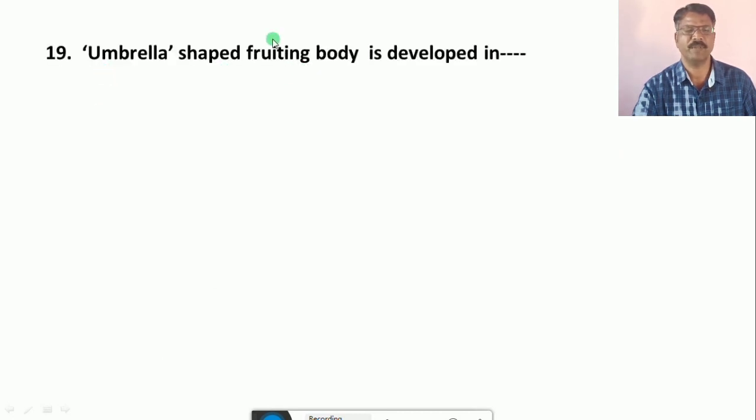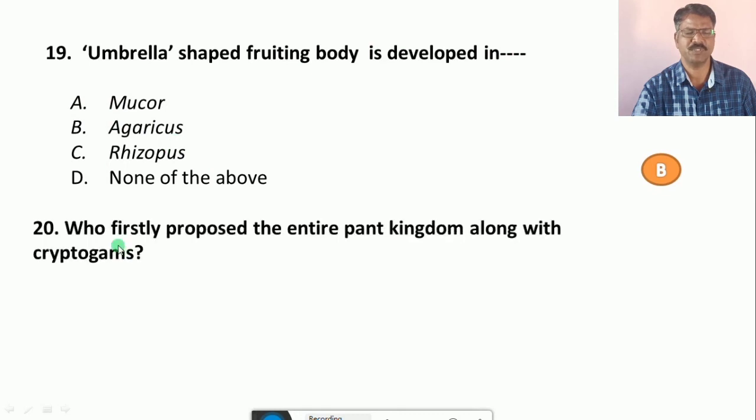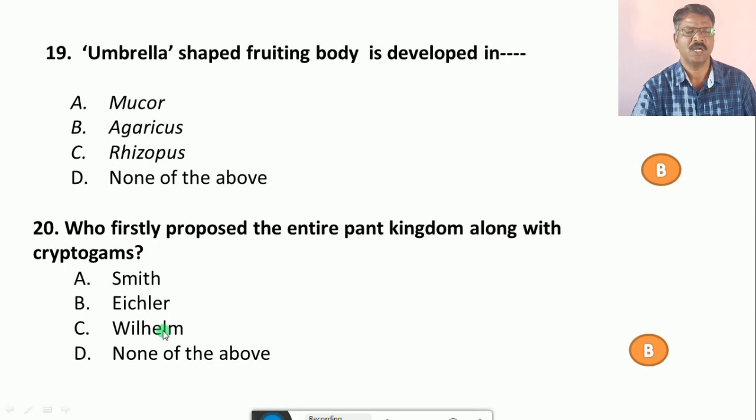Question number 19: Umbrella shaped fruiting body is developed in... Their options are A. Mucor, B. Agaricus, C. Rhizopus, D. None of the above. The correct answer is B, that is Agaricus. Question number 20: Who firstly proposed the entire plant kingdom along with cryptogams? Their options are A. Smith, B. Eichler, C. Wilhelm, D. None of the above. The correct answer is B, that is Eichler.